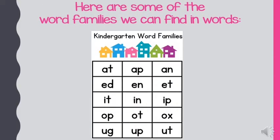So here are some of the word families we can find in words. If we start with the first row across, those are all the parts or the word families that start with that short A sound, 'ah.' There's 'at,' 'ap,' and 'an.'